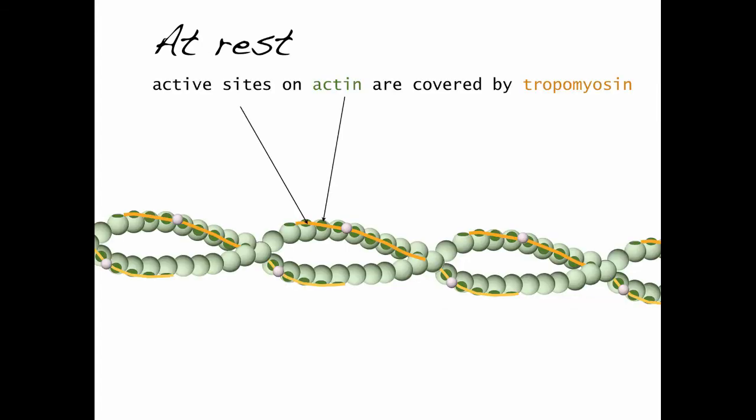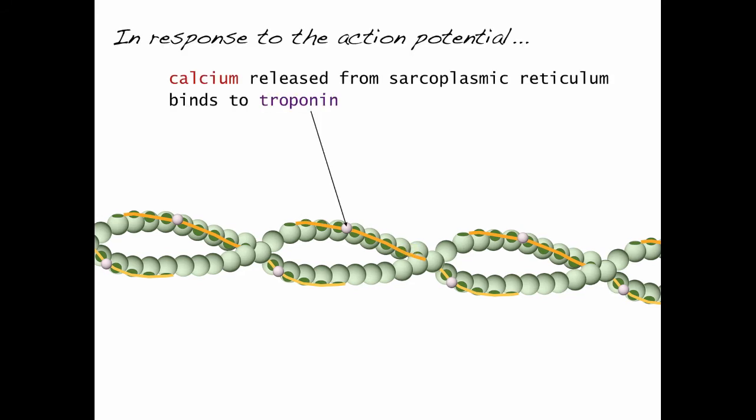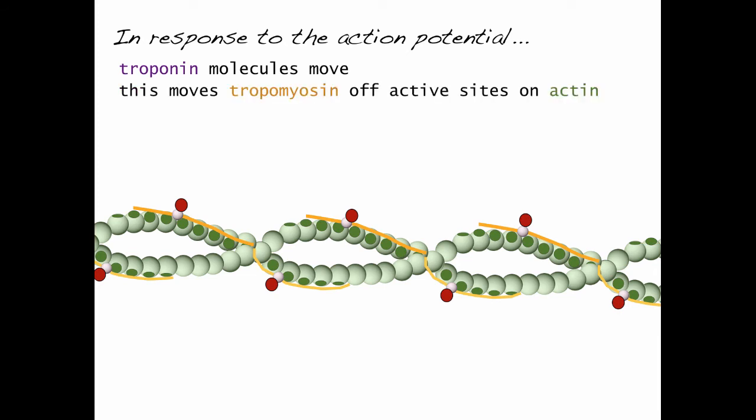So let's start at rest. The active sites on actin are covered by tropomyosin. In response to an action potential, calcium will be released from the sarcoplasmic reticulum and will bind to troponin. This will cause troponin molecules to move, which will move tropomyosin off the active site of actin, leaving them exposed.